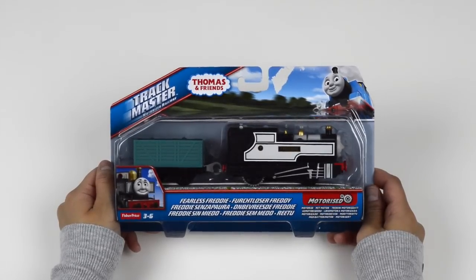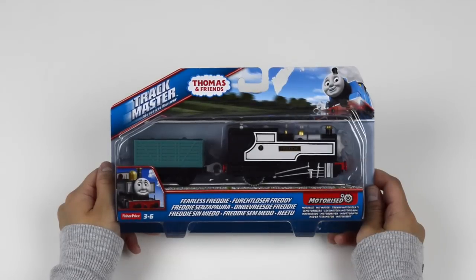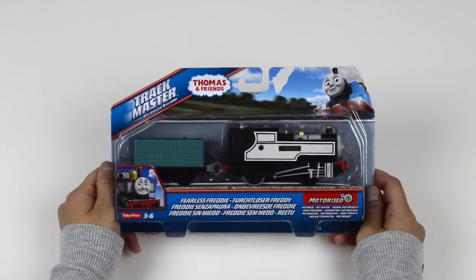Today we'll be unboxing Fearless Freddy from Thomas and Friends Trackmaster Motorised Railway. This locomotive can be used on any Trackmaster set you may have, and is recommended for ages 3-6.